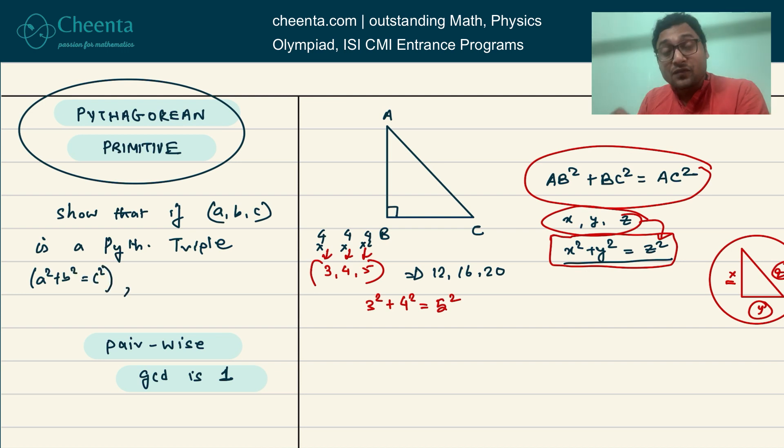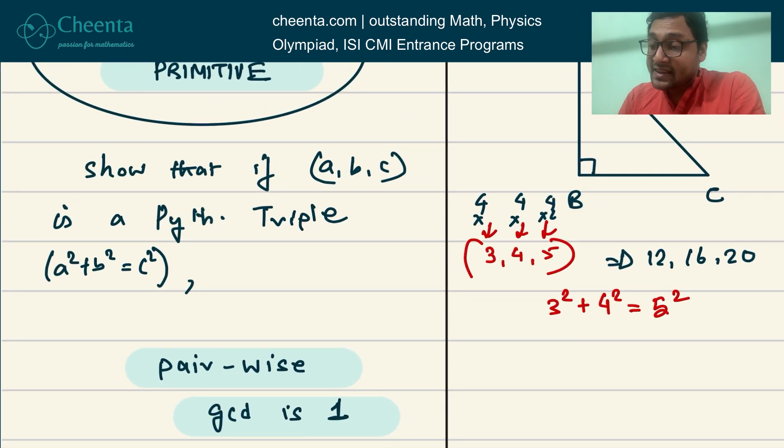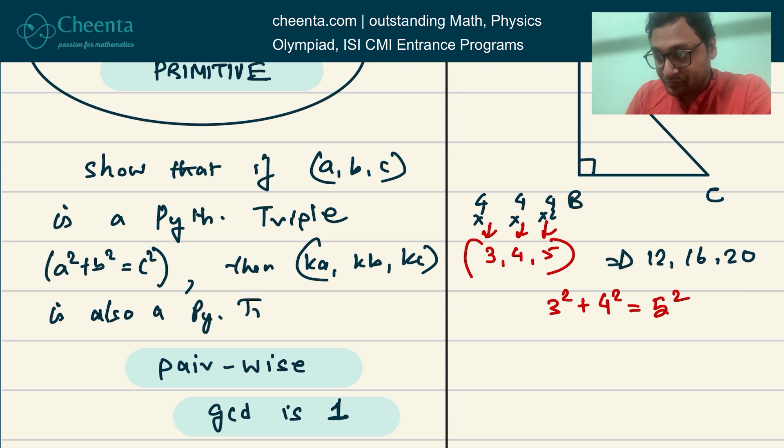then if you multiply A, B, C with any constant K, then K×A, K×B, K×C is also a Pythagorean triple. You can try to show this in the comment section. It's a very easy theorem.